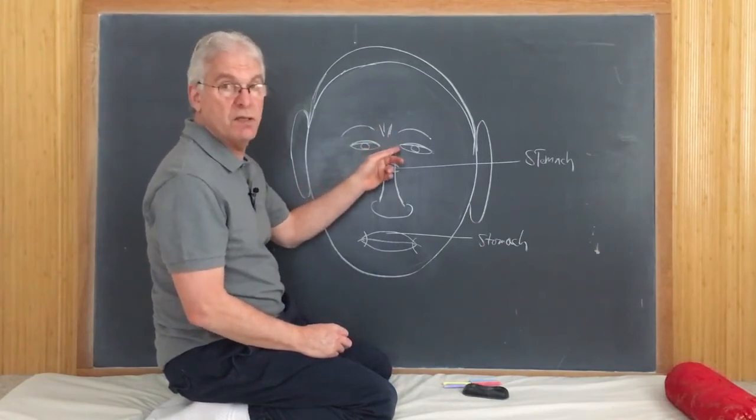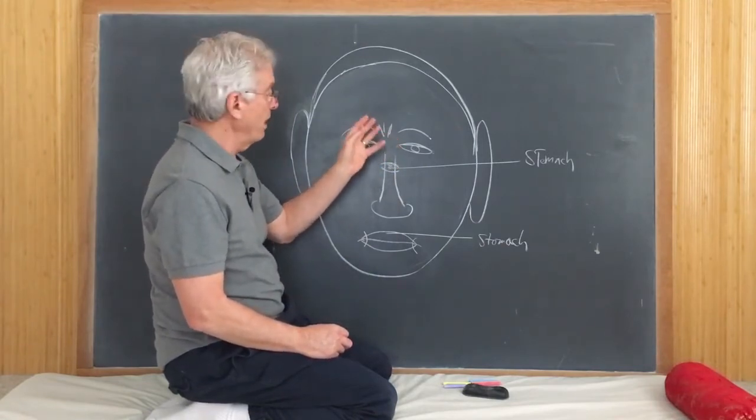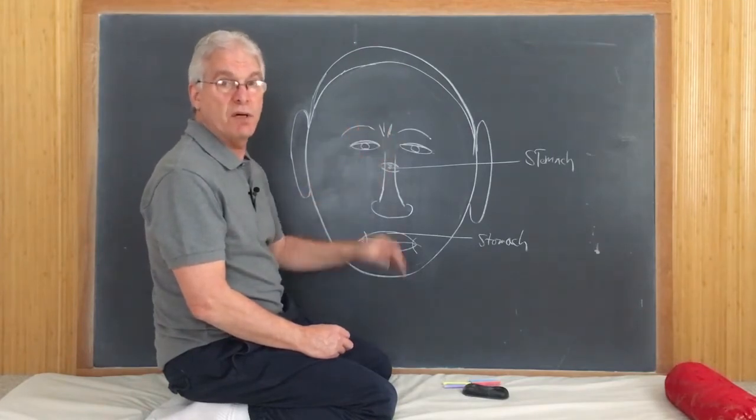And there we might see lines like this, swelling, or this kind of yellowish, brownish discoloration.